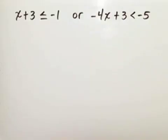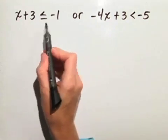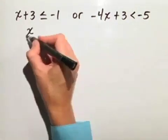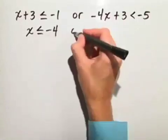Let's solve the compound inequality. First, we have x plus 3 is less than or equal to negative 1. Let's subtract 3 from both sides, and we have x is less than or equal to negative 4.